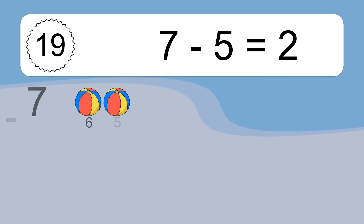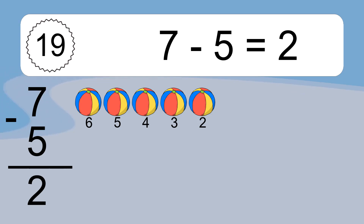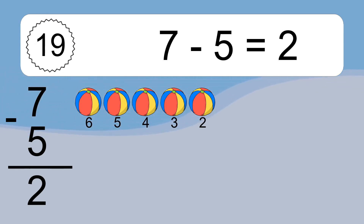7 minus 5 equals what? 7 minus 5 equals 2. Let's count it. 6, 5, 4, 3, 2.